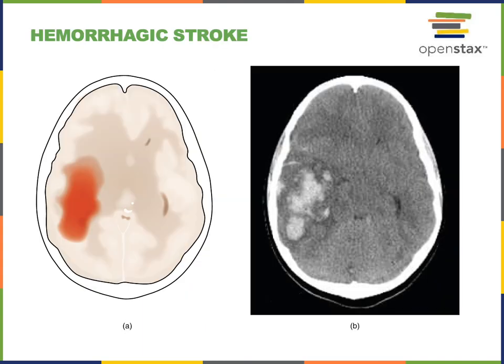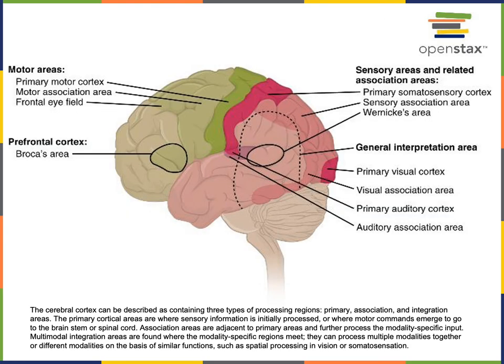Much of our understanding of the functions of the brain has come from studying damage to the brain. A hemorrhagic stroke is damage to blood vessels in the brain that causes bleeding which destroys neurons and disrupts functions carried out by cells in that region. By studying patients that have had brain damage such as a stroke, we can see what functions have been lost and infer that the damaged regions were somehow involved in those functions. Studying patients that developed language impairments following brain damage has led to the classic model of the language network, and these patients tended to have damage in the left hemisphere of the cerebral cortex.